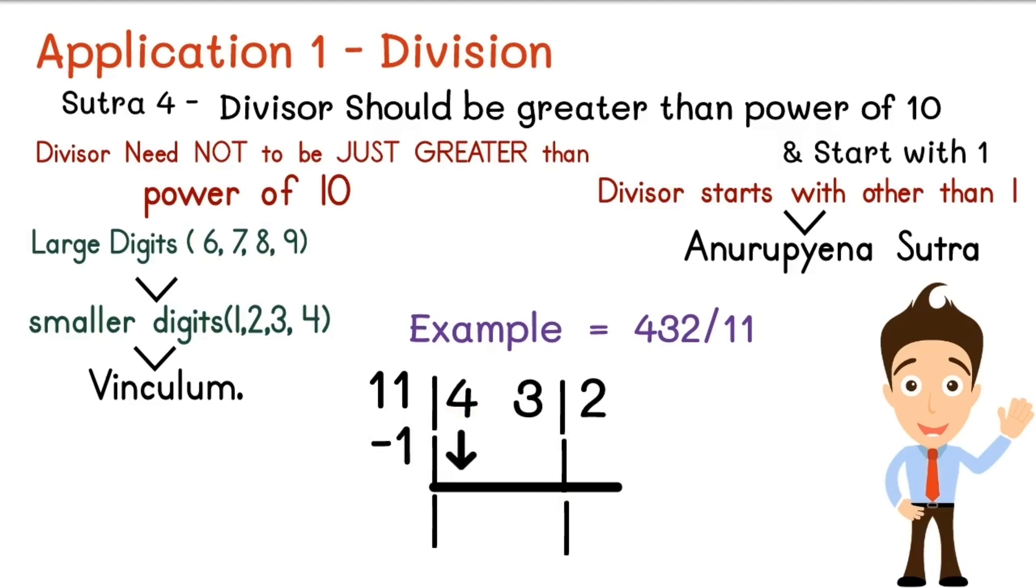Now take this 4 as it is below and multiply it by minus 1. So we get minus 4. Write down minus 4 here. Now 3 minus 4 equals minus 1. Now take this minus 1 and multiply with minus 1. So we get 1.